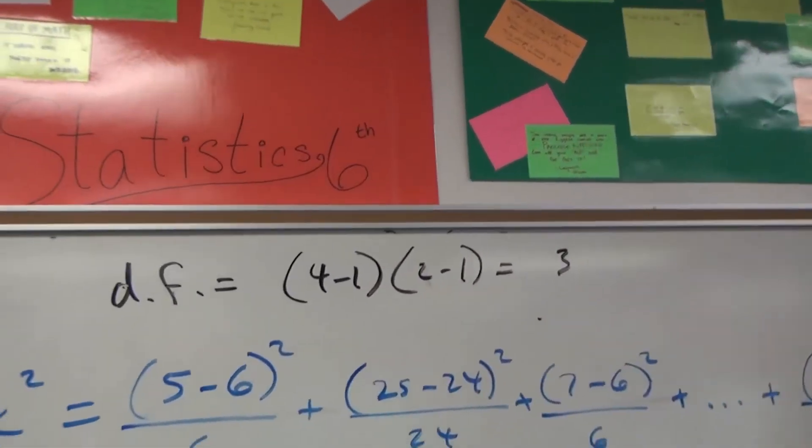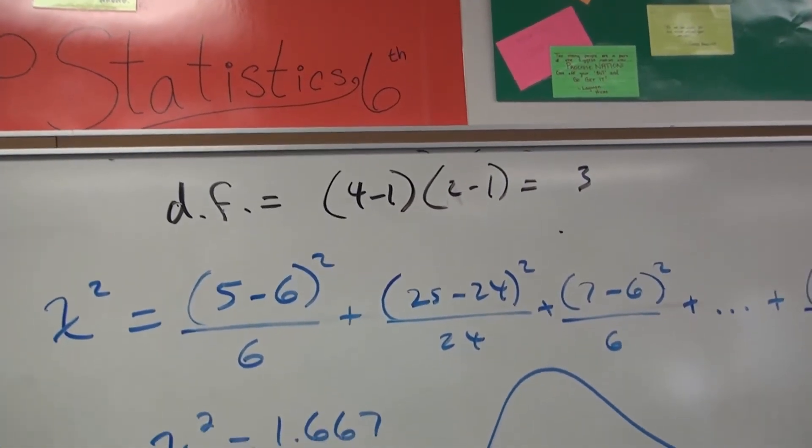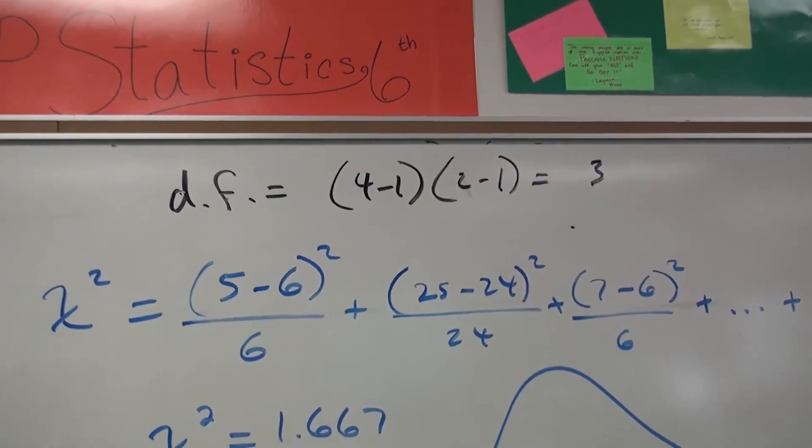Now we calculate the degrees of freedom. That's rows minus 1 times columns minus 1. We get 3 degrees of freedom.